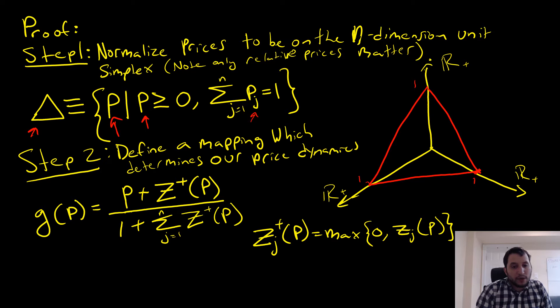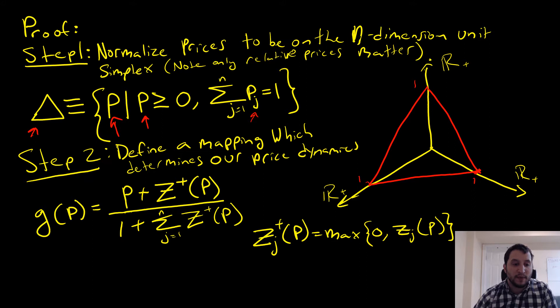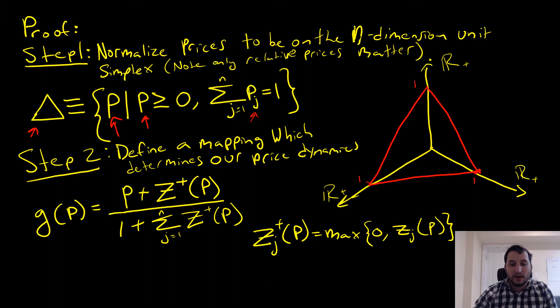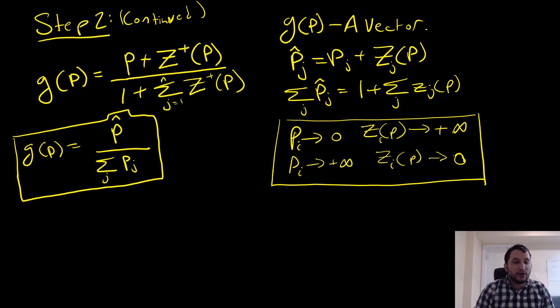Step number two is that we're going to define a mapping which determines our price dynamics. We're going to pick a mapping g(p), which is equal to p plus the excess demand in a particular market — our vector of excess demands. We're adding two vectors here, all over a scalar. z_j-plus maintains that excess demand in each market is going to be either the value that spits out or zero. We could have positive excess demand in individual markets, but when we sum them all together they're going to equal zero.